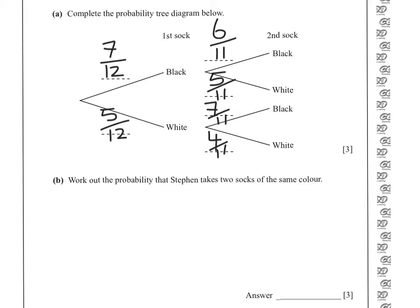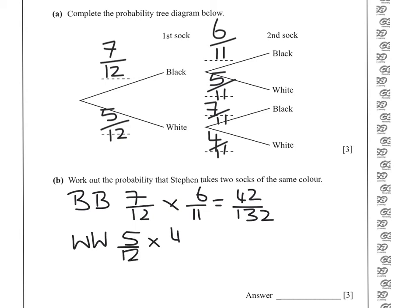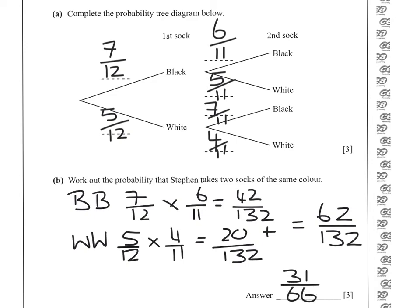2 blacks multiply the probabilities, so 7 twelfths times 6 elevenths, 42 over 132. And 2 whites would be 5 twelfths, followed by 4 elevenths, 20 over 132. Adding those together we get 62 over 132, which simplifies to 31 over 66.